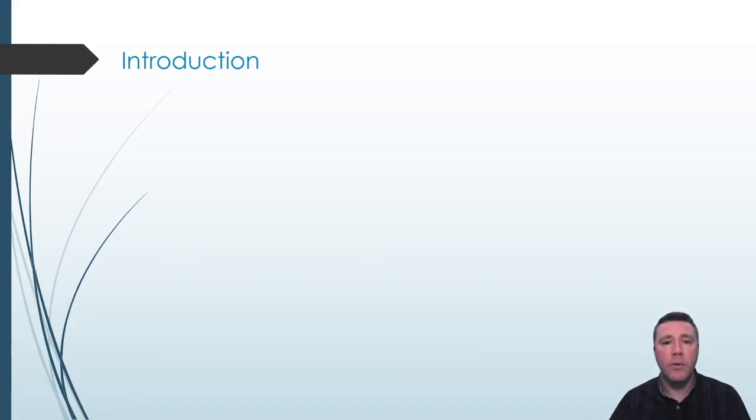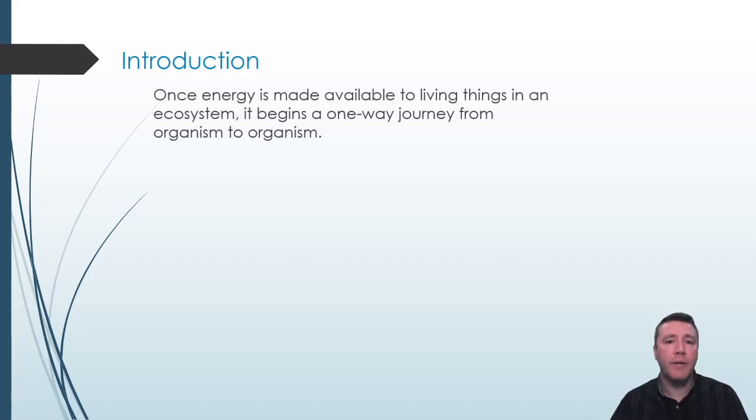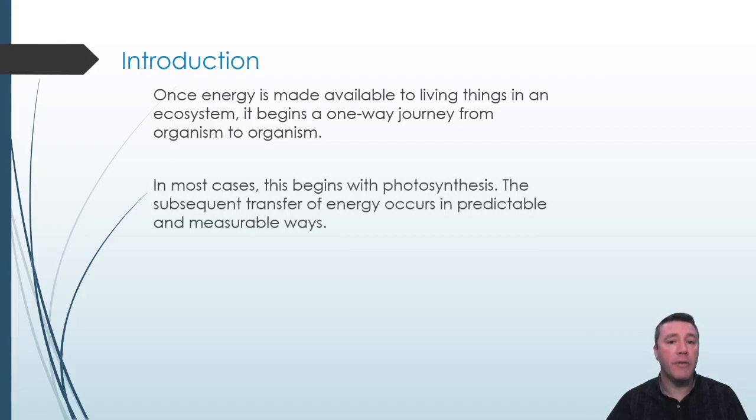In topic 1.8, we learned that primary productivity is a measure of photosynthetic output by producers and is the basis for energy entering an ecosystem. Once that energy is part of a living thing, it travels from organism to organism on a one-way trip.